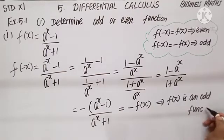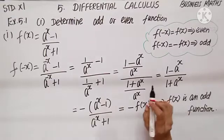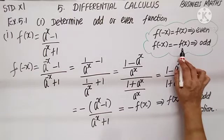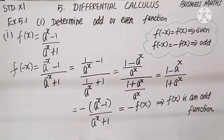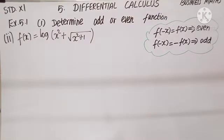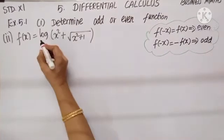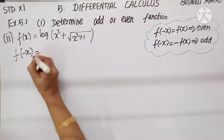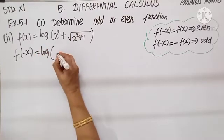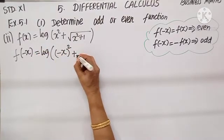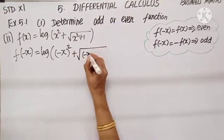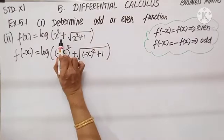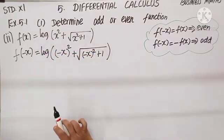Since f(-x) equals minus f(x), we declare f(x) is an odd function. When f(-x) equals minus f(x), we declare the function to be odd. Second subdivision: f(x) = log(x² + √(x² + 1)). So f(-x) = log((-x)² + √((-x)² + 1)).